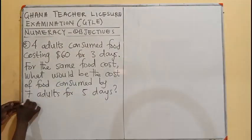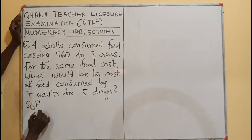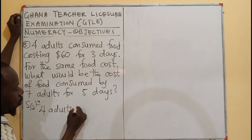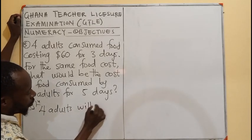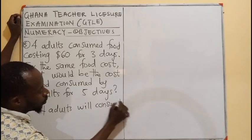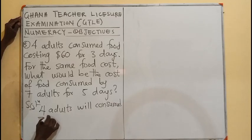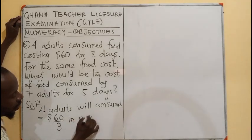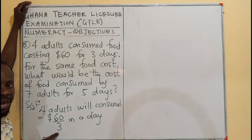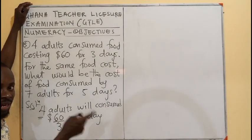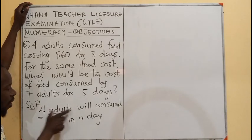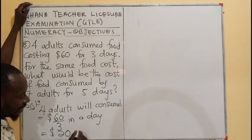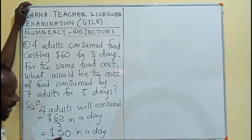Let me break it down. Four adults consume food worth $60 over 3 days. So the cost for all 4 in one day is 60 divided by 3, which gives us $20 in a day.